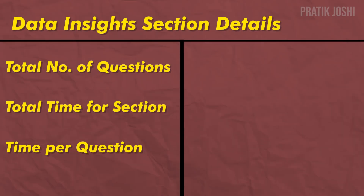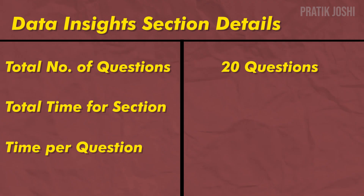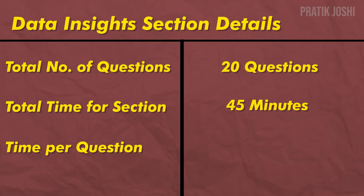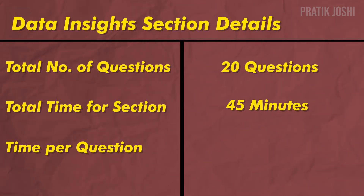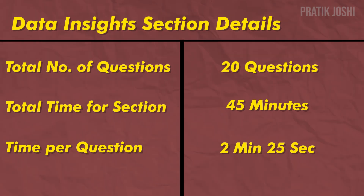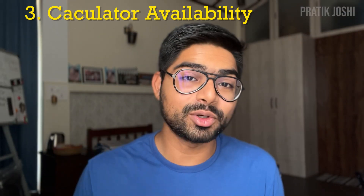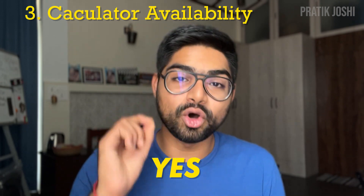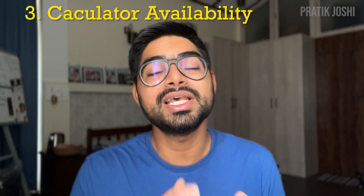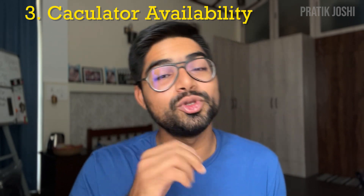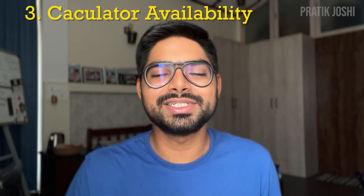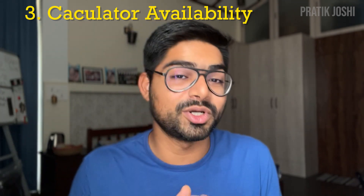There are some details about this section that everyone needs to know. The first thing is how many total questions are there — the answer is 20 questions. How much time is given to answer this section — the answer is 45 minutes. So on average, an aspirant can take 2 minutes and 25 seconds per question. Each aspirant gets to answer one question at a time in this section. Regarding whether the calculator facility is available — yes, the onscreen calculator is available, but it may not be wise to use it because you cannot use the keyboard; you have to use your mouse and select each number for calculation.